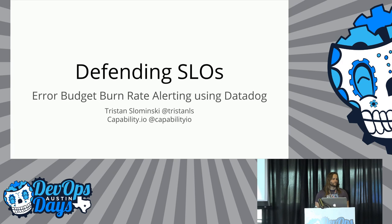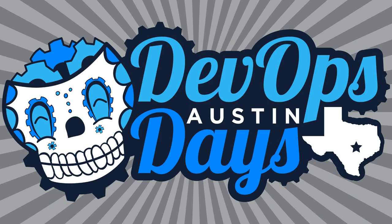All right, everybody, who's ready to learn how to be good at Datadog, which I am horrible at? If you are, then Tristan is going to give you a pitch that his open space is going to be in open space five during the next cycle of open spaces. So if you'd like to talk, open space five. Take it away, Tristan.